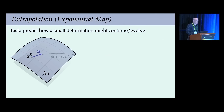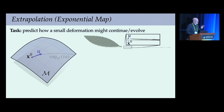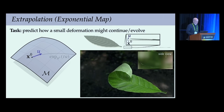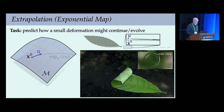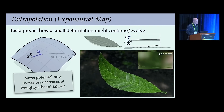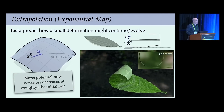Beyond interpolation, we can also extrapolate a small initial deformation. For instance, if we just bend the tip of a leaf ever so slightly in a modeler, we can extrapolate that motion and the leaf curls up nicely while avoiding intersection. In this example, a straight path gradually increases the repulsive potential in a way guided by the initial deformation.